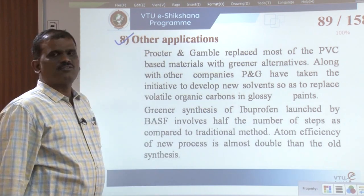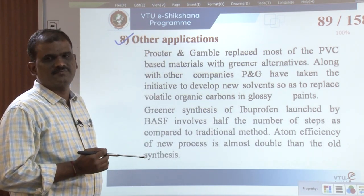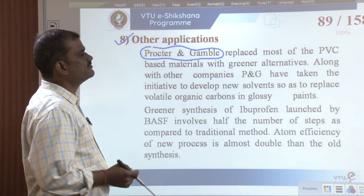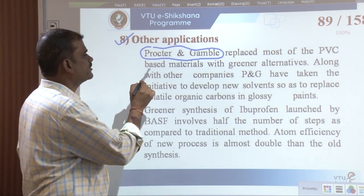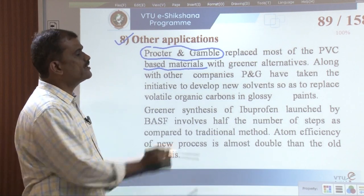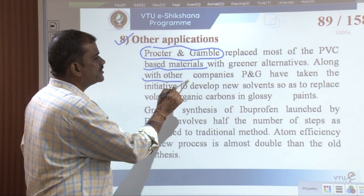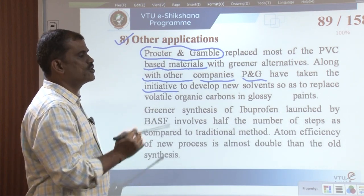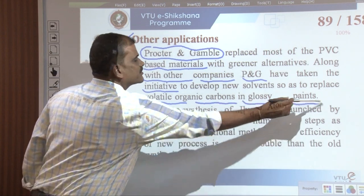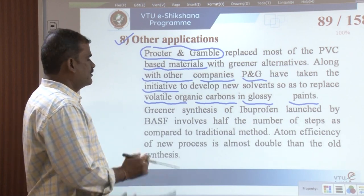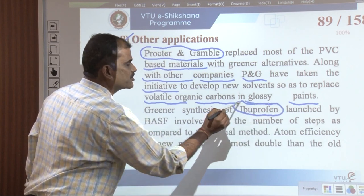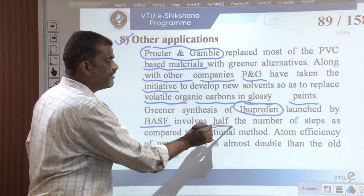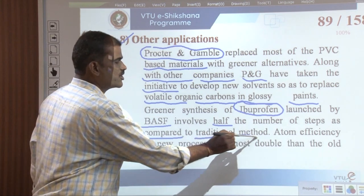Other applications of green chemistry include P&G (Procter & Gamble), which replaced most PVC-based materials with alternatives. Along with other companies, P&G has taken the initiative to develop new solvents to replace volatile organic compounds in glossy paints. The greener synthesis of ibuprofen launched by BASF involves half the number of steps compared to the conventional route.